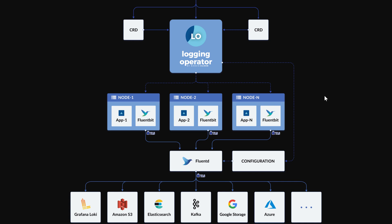The objective here is to create the logging system for the cluster. The logging operator will create the different instances of FluentBit and FluentD. FluentBit will collect the logs from the applications and then send those logs to FluentD. FluentD in turn will also send those logs to different sources, including Elasticsearch, which we'll be using today and will install through an operator.